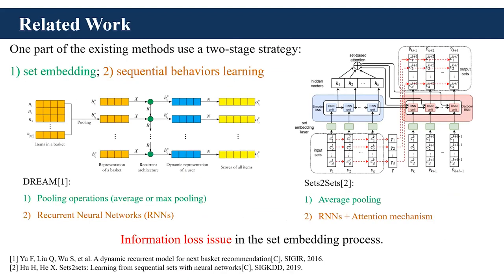Temporal set prediction has attracted the attention of some researchers in recent years. We can divide existing methods into two groups. Methods in the first group first embed each set into a fixed-size vector, then convert the prediction of temporal sets into the prediction of temporal events. For example, the DREAM model uses pooling operations to embed each set into a vector and employs an RNN structure to learn the dynamics in the sequence. However, the two-step framework often leads to information loss issues.